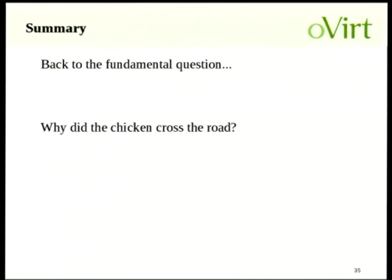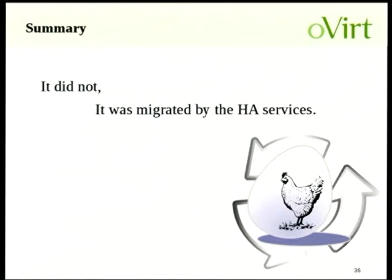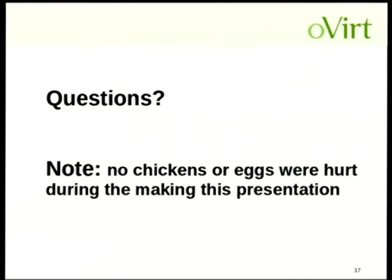So basically that's it. We can return to the fundamental question: why did the chicken cross the road? From what we tested, it didn't cross the road — it was migrated.